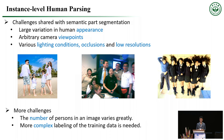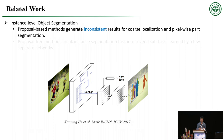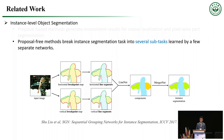Besides the difficulties shared with single-person parsing — like various appearances, viewpoints, and occlusions — instance-level human parsing is more challenging because the number of person instances varies largely and more complex labeling of training data is needed. Our target is also very relevant to instance-level object segmentation. However, proposal-based methods like Mask RCNN may fail to model the interaction among different instances and may generate inconsistent results for localization and segmentation. On the other hand, proposal-free methods like SGN need to separately learn several sub-networks and resort to complex post-processing to obtain the final result.